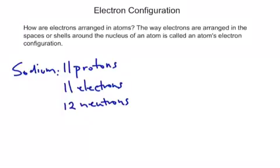How is it that we could make simple drawings of atoms? We'd have to know where the protons and neutrons go, and we'd have to know where all the electrons go. So let's have a look at an example using the atom sodium.